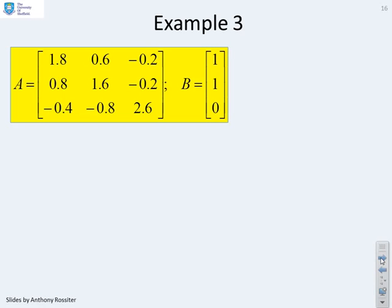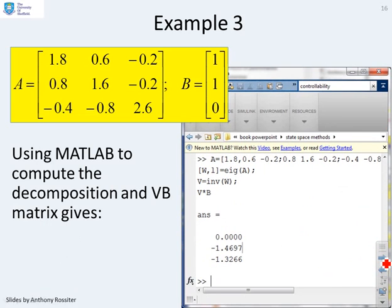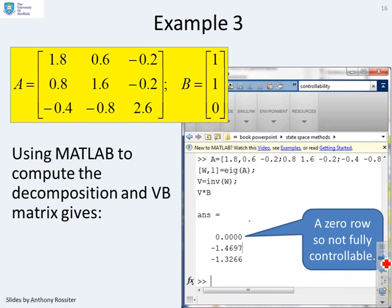Third example, again a 3 by 3. Here we're going to go straight to MATLAB because we're recognizing that the computations are rather tedious on pen and paper. Here's the MATLAB code. And what do you notice in this particular case? The first row of VB is zero. So this system is not fully controllable. If you wanted to get to a position which included a component along the first eigenvector, you could not do it.